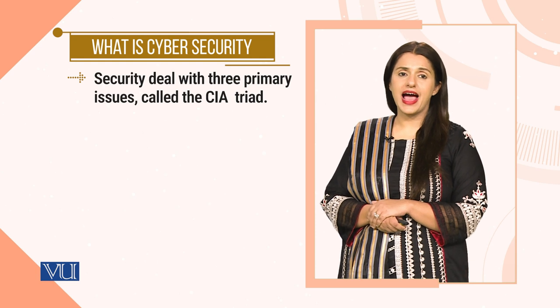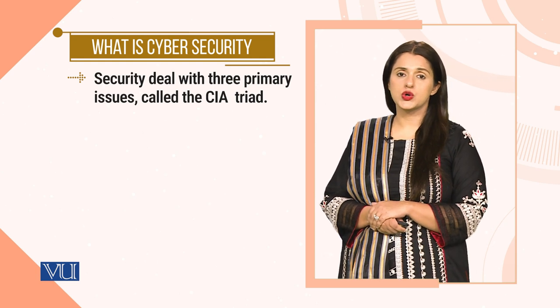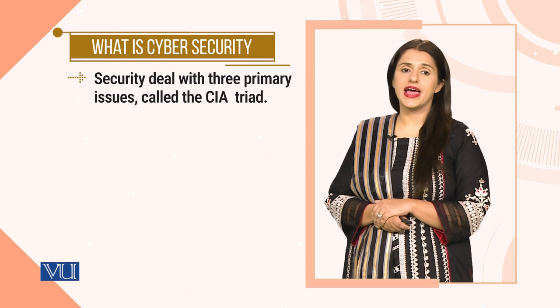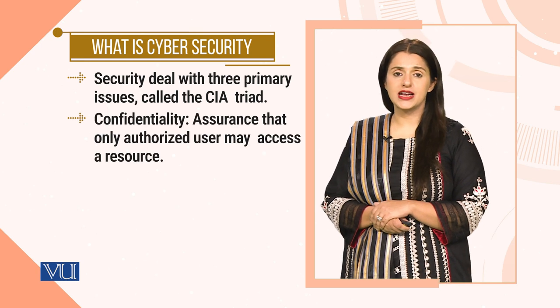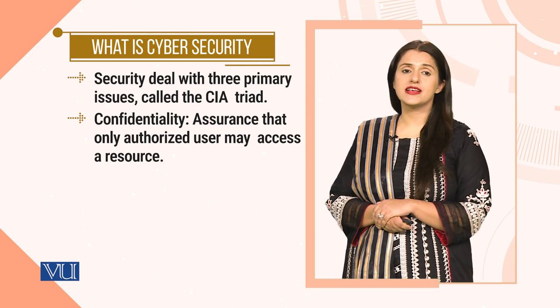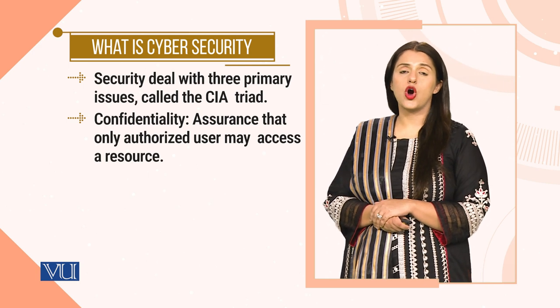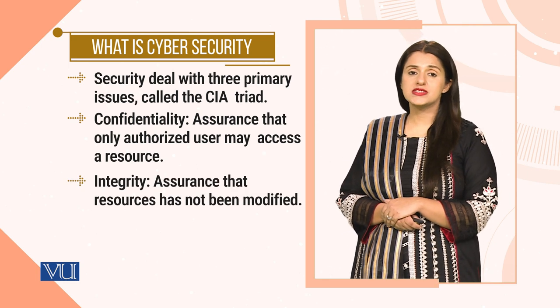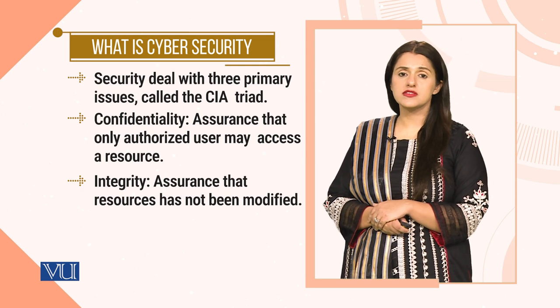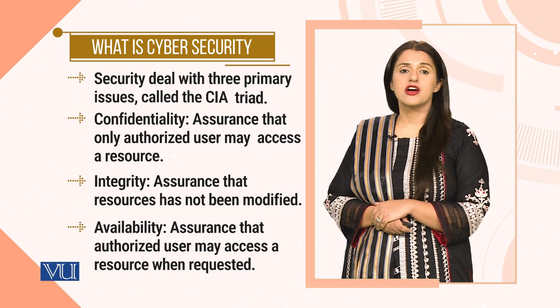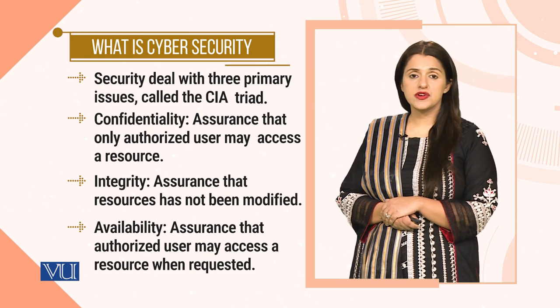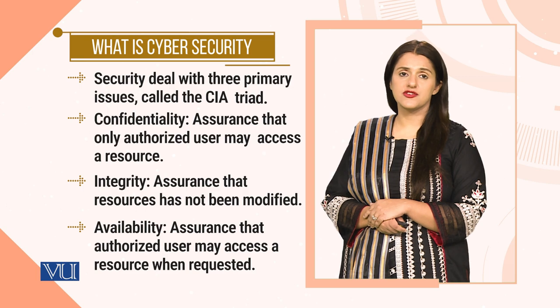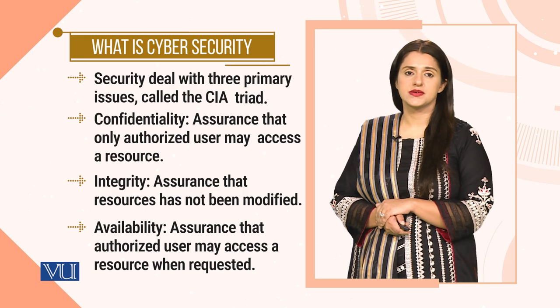There are three primary aspects of cyber security which we call the CIA triad. C refers to confidentiality, which assures that only an authorized user may be allowed to access a resource. I refers to integrity, which is an assurance of data accuracy. A refers to availability, which ensures that an authorized user may access a resource when requested.